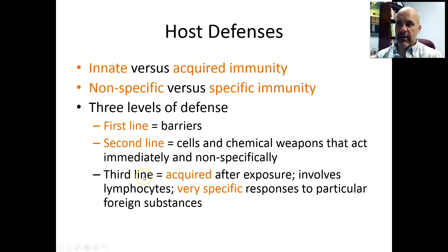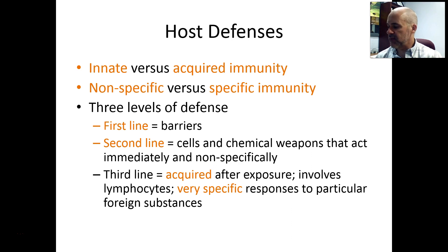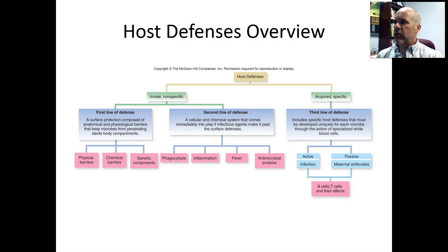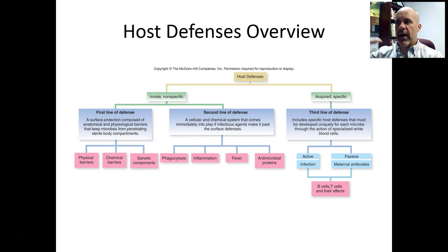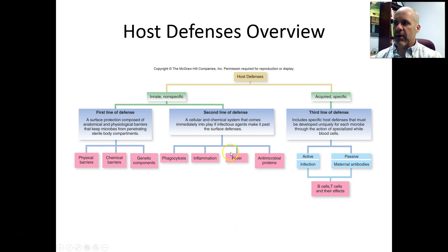Finally, you have the third line of defense, which is acquired after exposure. These are the lymphocytes — the white blood cell warriors — that produce very powerful, very specific responses to foreign things your body has been exposed to. This diagram in Chapter 12 gives a broad overview of all three lines of defense and their features, and it's a good one to return to after going through Chapters 12 and 13.